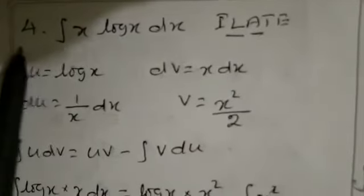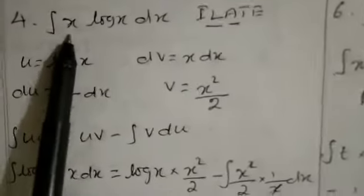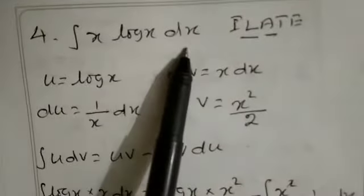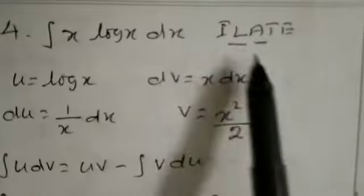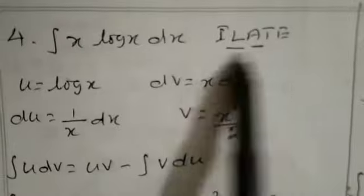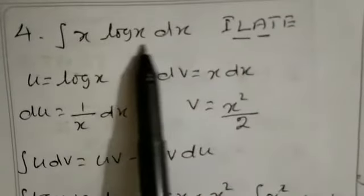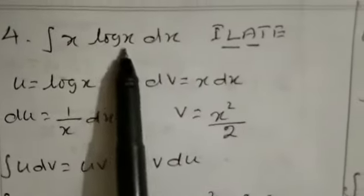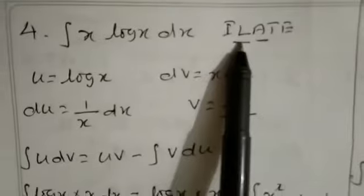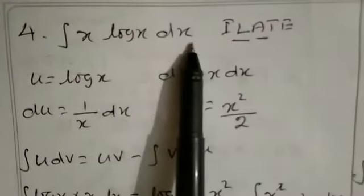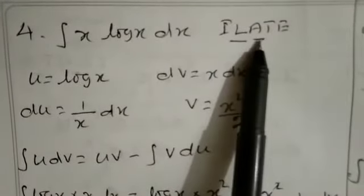We will see the fourth sum: integration of x into log x. Here we have to see the highlight. Log term is there, so log is the first term and then x into dx we have to take it in algebraic form.